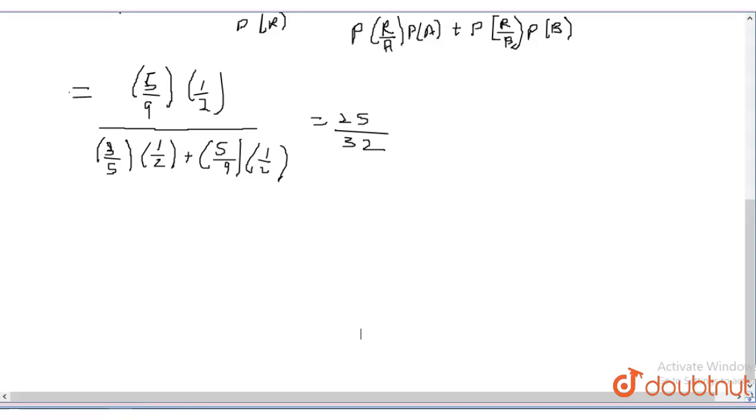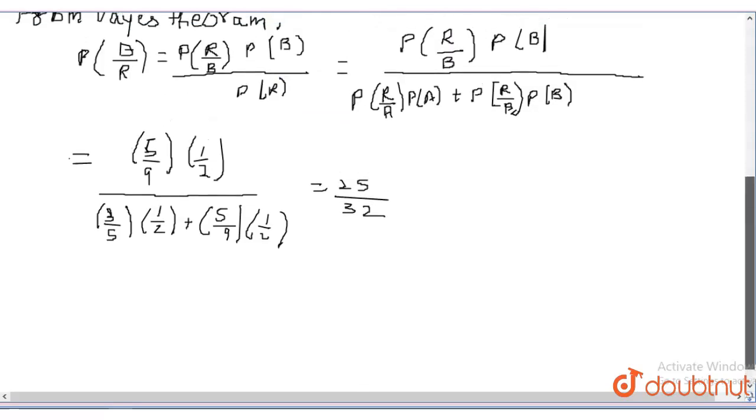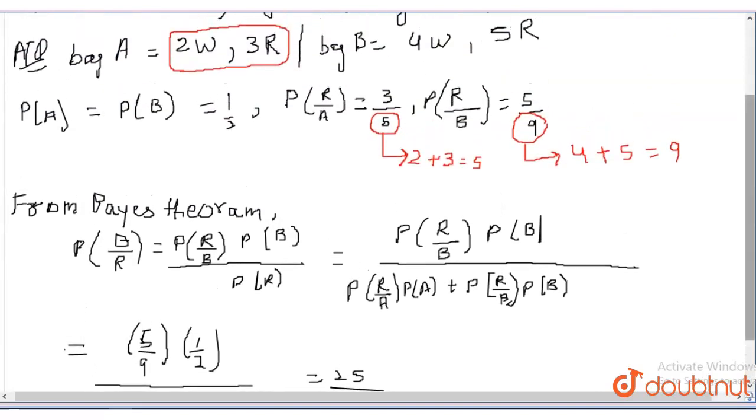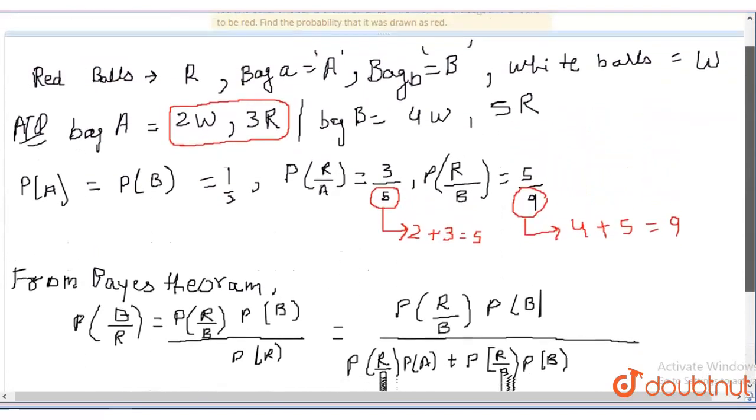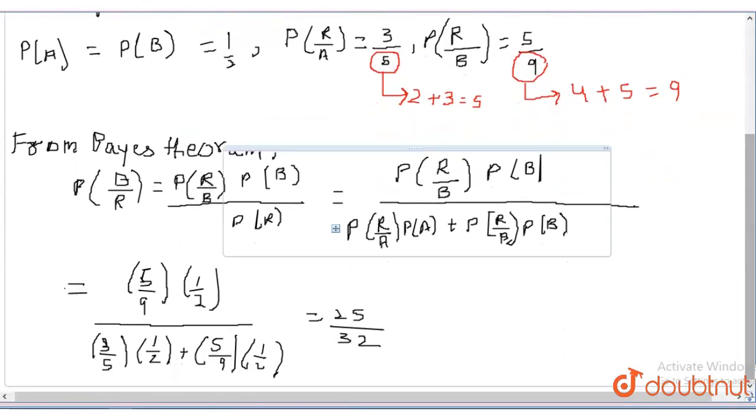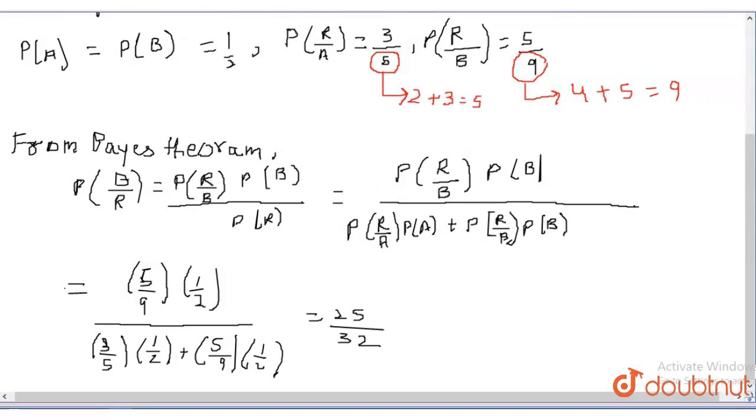So here we got the solution that 25 upon 32 is the answer to this question. The very important part of this question is that we are applying Bayes theorem here. After evaluating this question, we get the answer that is 25 upon 32.